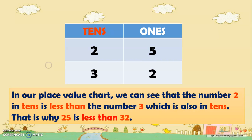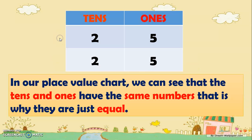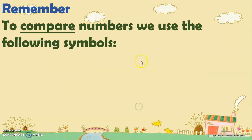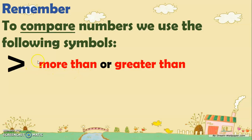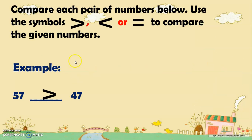Next, in the place value chart, the number two in tens is less than the number three, which is also in tens. That is why 25 is less than 32. And in our place value chart, the tens and ones have the same numbers, so they are just equal — 25 is as many as 25. Now remember, to compare numbers we use the following symbols: more than or greater than, less than, and as many as or equal.